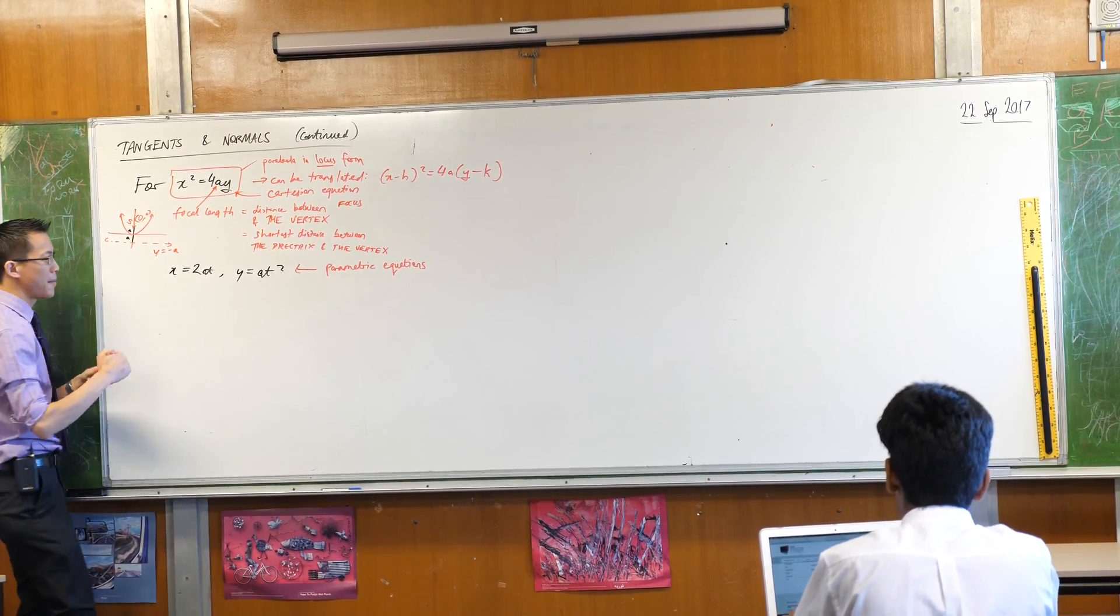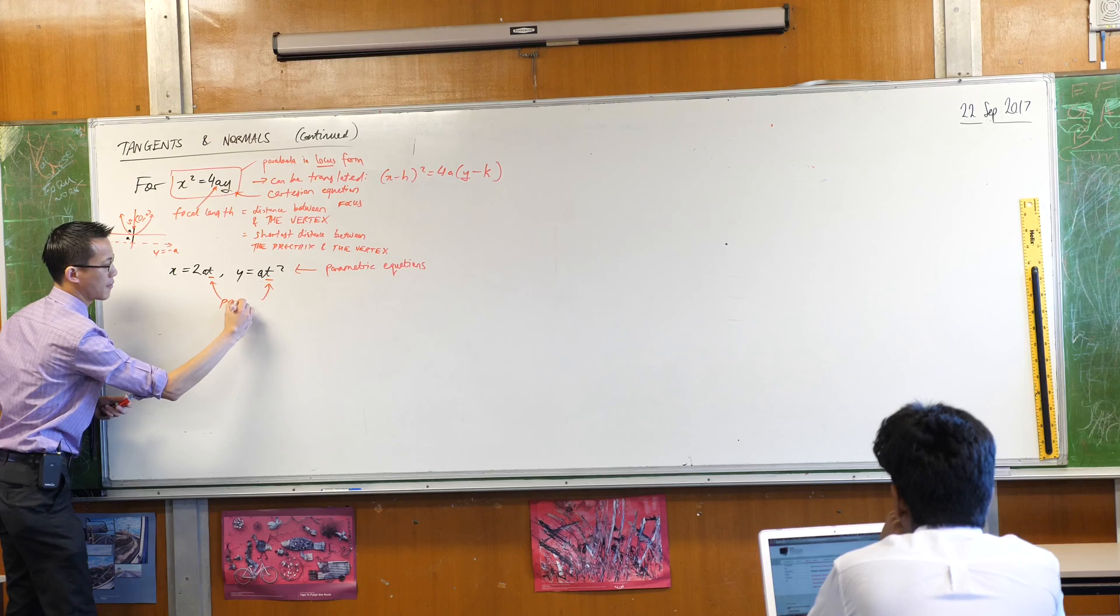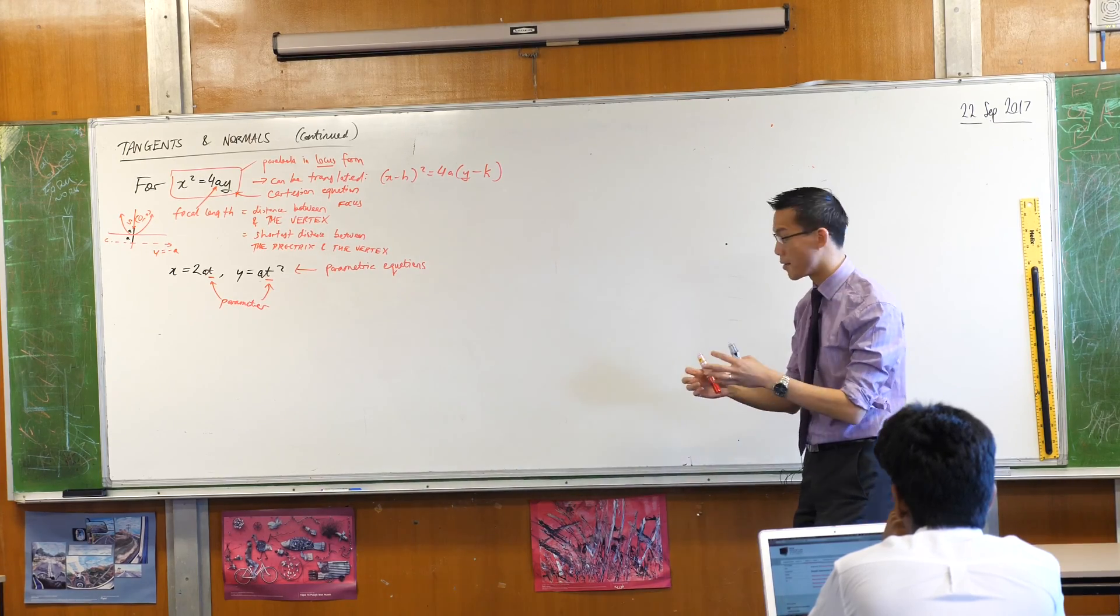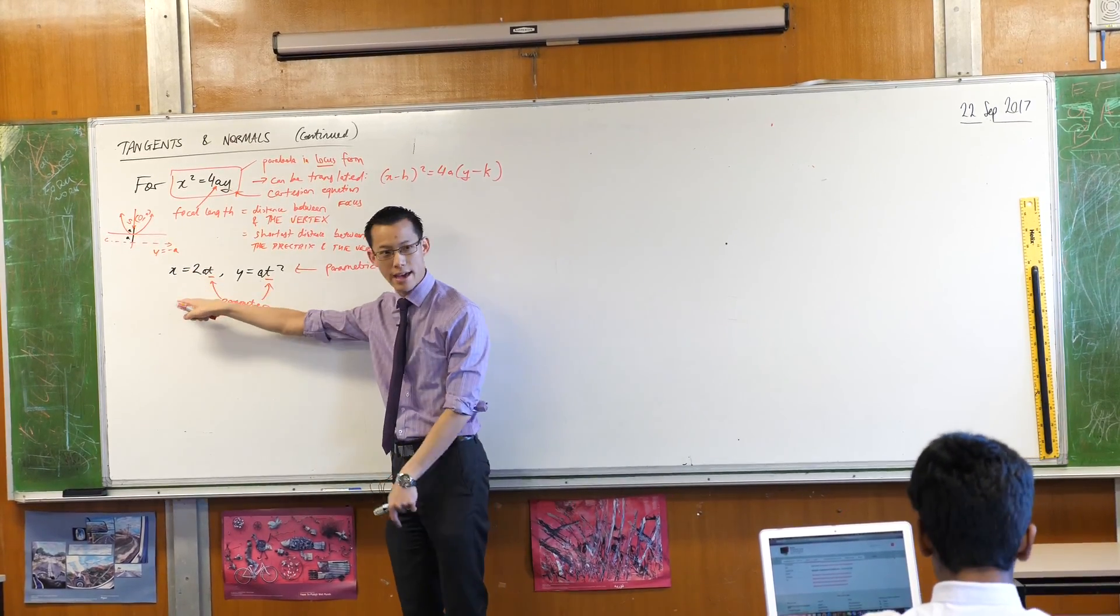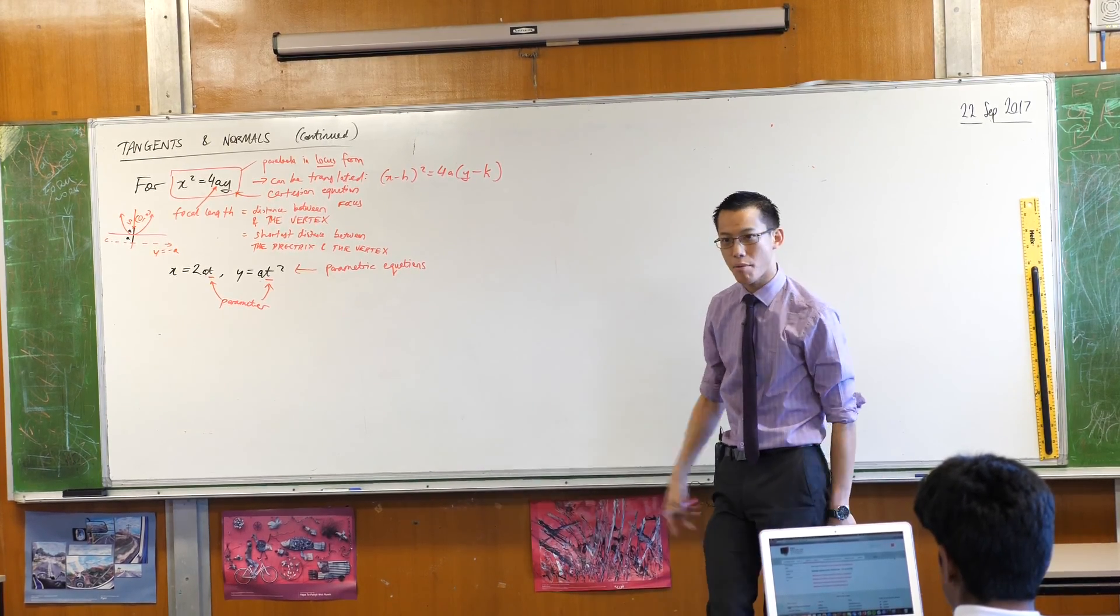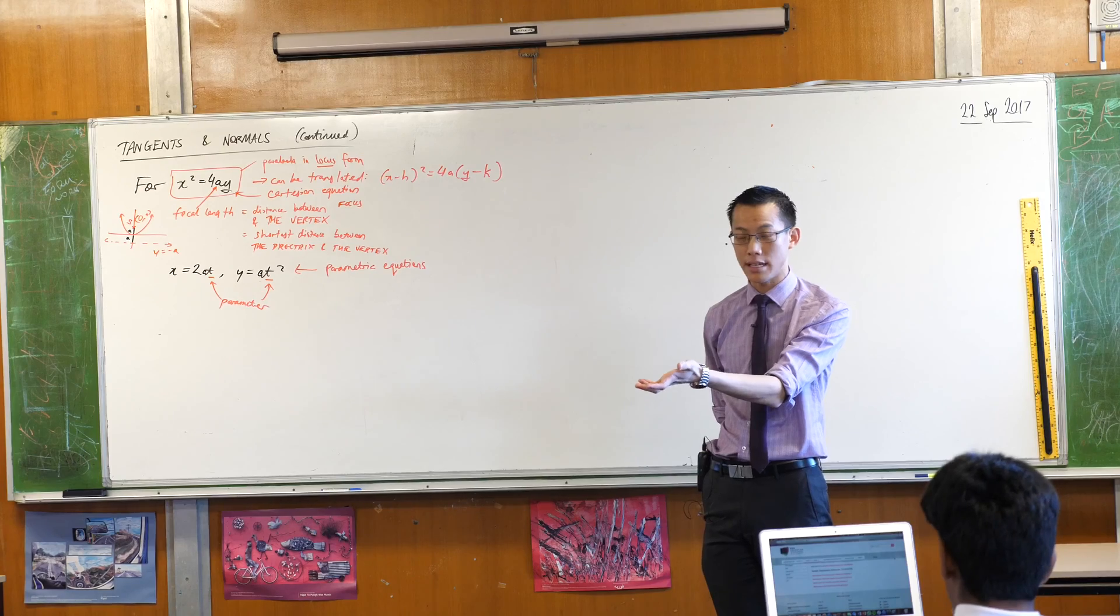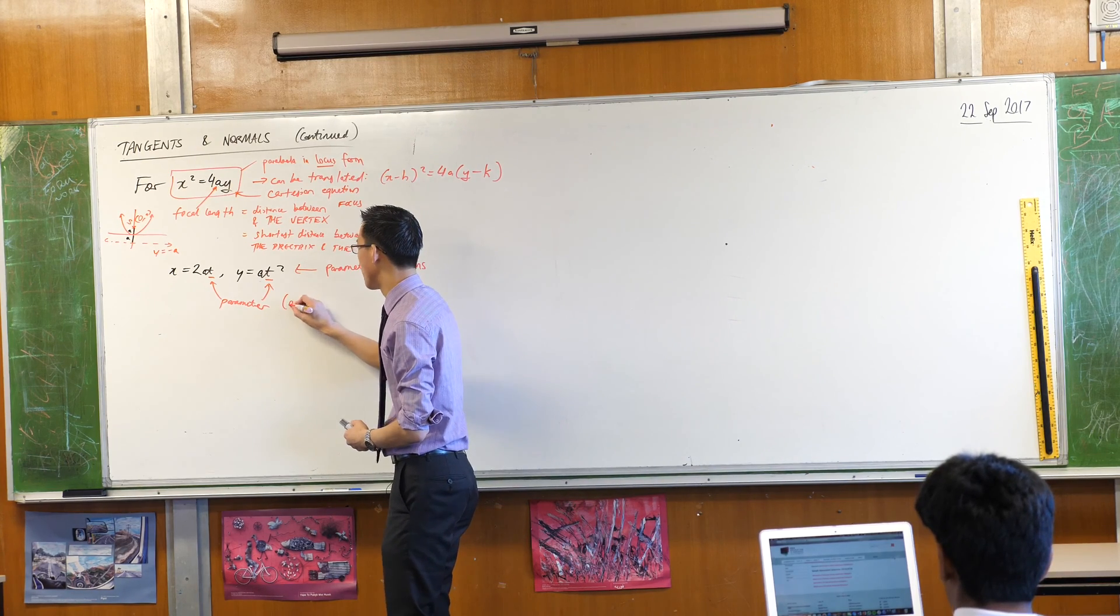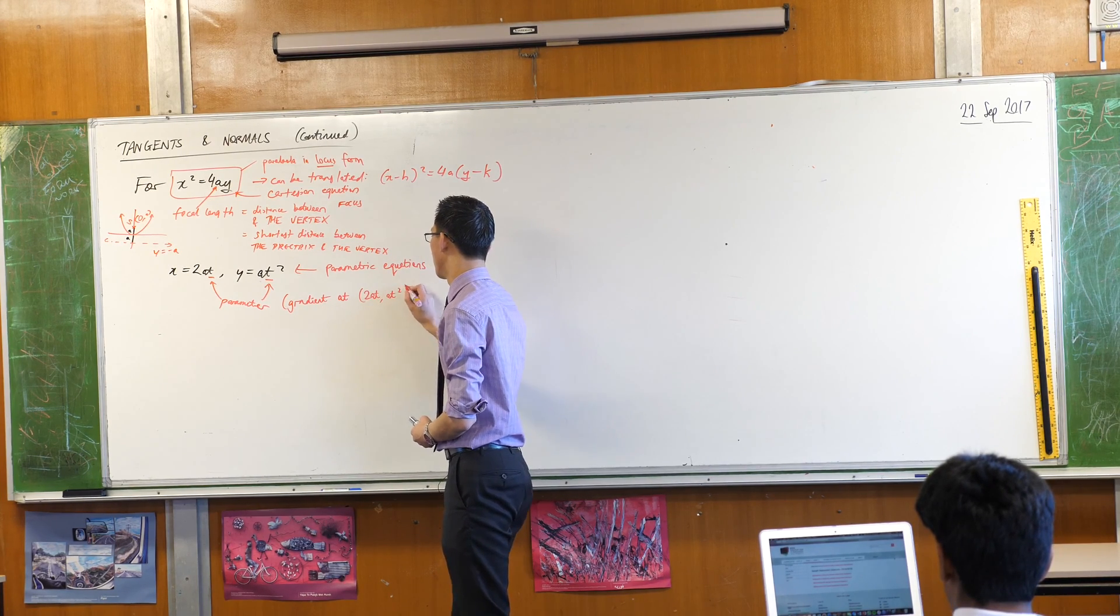So these parametric equations, what they tell you is that the parameter t is this third variable. It's on the side. That's literally what parameter means. It's this on the side measurement. And it defines x and y. If you know what t is, you can find out what x and y are independently, okay? In the context of the parabola, what is the parameter? What does it actually mean? Because on the unit circle, we know what that parameter theta means. It's the angle at the center. What does this parameter mean in the context of the parabola? It's the gradient at that point.